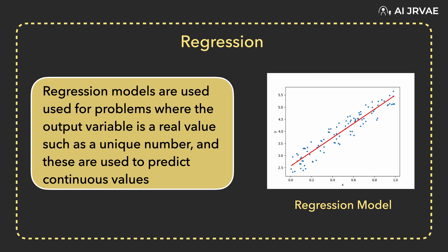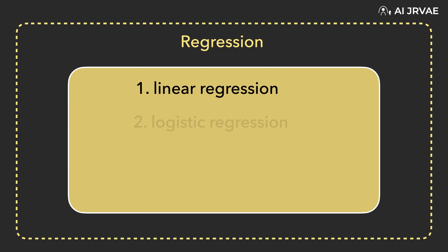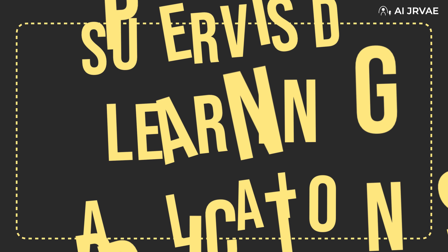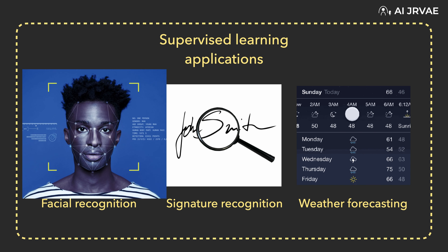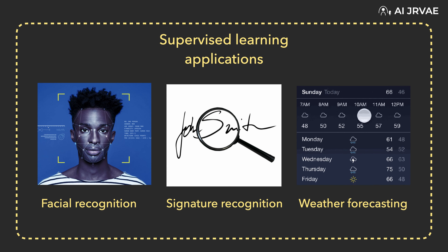Regression models are used for problems where the output variable is a real value, such as unique numbers, and these are used to predict continuous values. It is most often used to predict numerical values based on previous data observations. Some of the more familiar regression algorithms include linear regression, logistic regression, polynomial regression, and ridge regression. Real life applications include face detection, signature recognition, weather forecasting, among others.